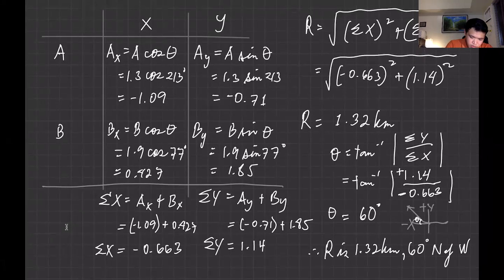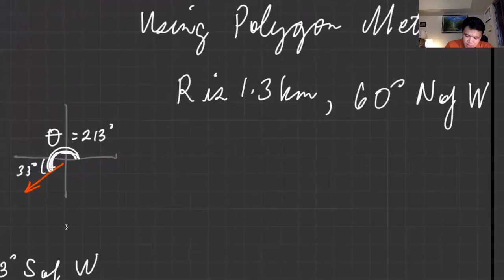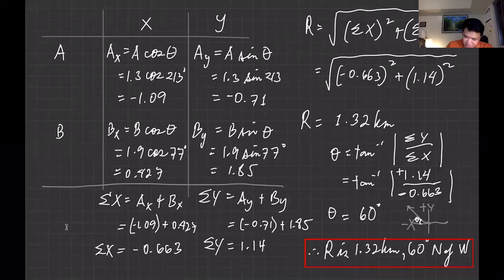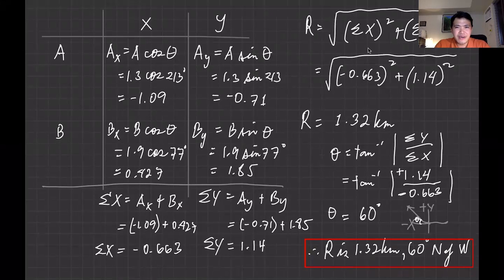So R is 1.32 kilometers, 60 degrees north of west — and as you can see with our polygon method, we get the correct answer. Amazing — different methods give the same answer. See you in the next example. If you find this complicated, just follow my next example which is a little harder but I'll walk you through it step by step again.